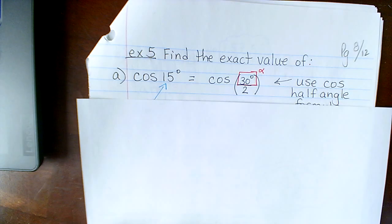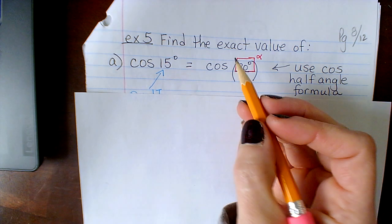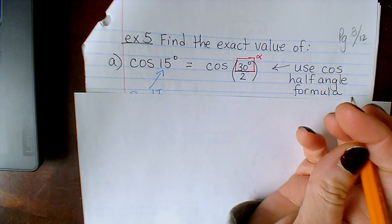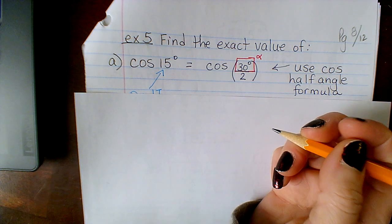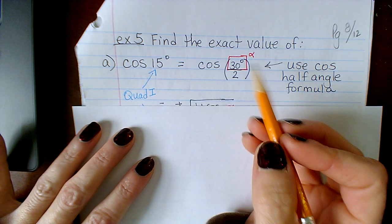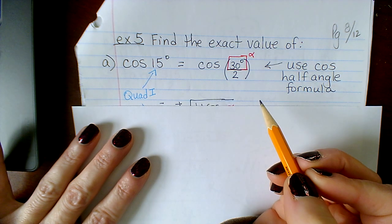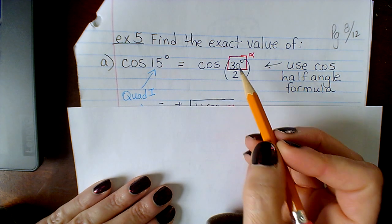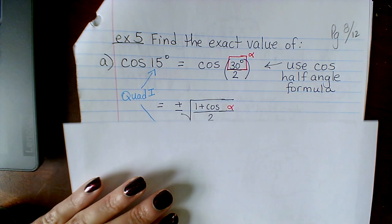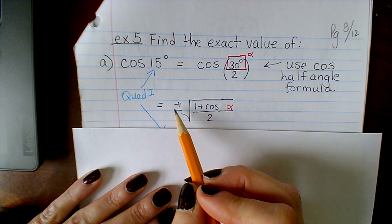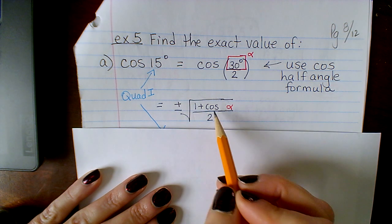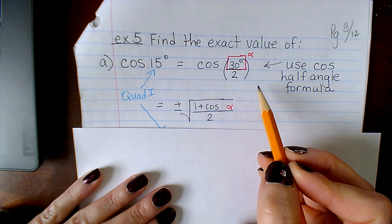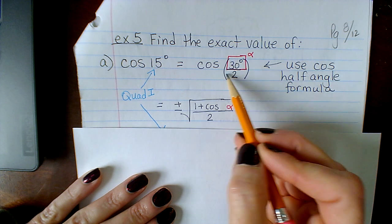Let's see how these half angle formulas work. So if we want to find the exact value. Now the fact that it says exact means don't pick up your calculator and take the cosine of 15 degrees and give me some decimal. I don't care if you give me all the decimal points your calculator gives you, it's still not exact. I'm going to write 15 degrees in terms of 30 over 2. Why? Why 30 over 2? Because 30 is one of those nice angles that we know exact values for. And if I do this, I can use that cosine half angle formula. The cosine half angle formula is that plus or minus the square root of 1 plus cosine alpha over 2. Alpha being 30 degrees because the formula is for alpha over 2. So alpha being 30 degrees.